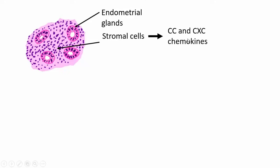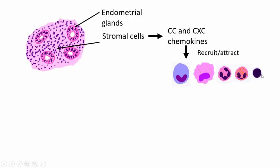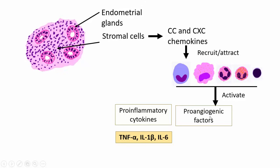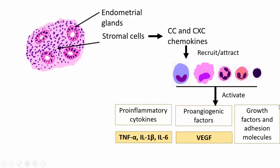These stromal cells secrete CC and XC chemokines, which recruit and attract monocytes, macrophages, neutrophils, eosinophils, and lymphocytes. All these inflammatory cells activate pro-inflammatory cytokines — tumor necrosis factor alpha, interleukin-1 beta, and interleukin-6. Additionally, they activate pro-angiogenic factors like vascular endothelial growth factor, as well as various growth factors and adhesion molecules.